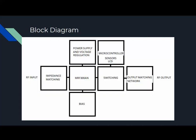Here's a block diagram of the amplifier with the RF input, impedance matching, the MOSFET, switching output network, bias and power supply, and then a microcontroller to control all the functions of the amplifier, including protection.